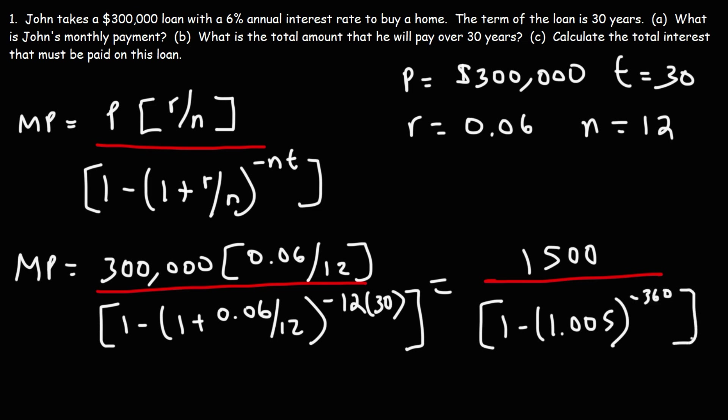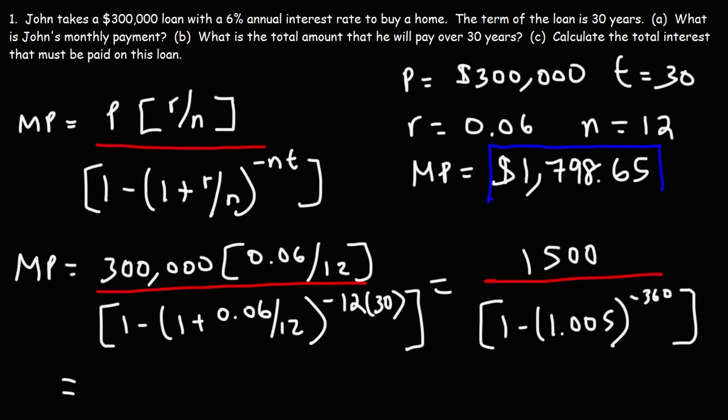12 times 30 is 360, so this is going to be raised to the negative 360. Go ahead and type this into your calculator exactly as you see it: 1,500 divided by 1 minus 1.005 raised to the negative 360. Make sure you close the parentheses at the end, otherwise you may get a different answer. The answer is $1,798.65, so that's how much John is going to have to pay each month for his mortgage.